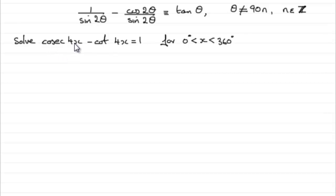So when we've got cosec 4x, we can think of this then as 1 over the sine of 4x. And for cot 4x, that's cos of 4x over the sine of 4x. And this, we're told, equals 1.